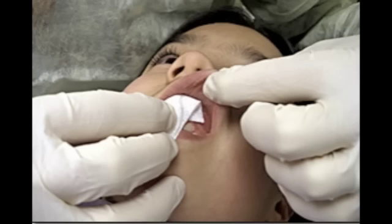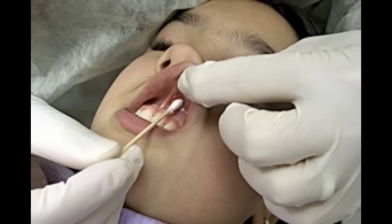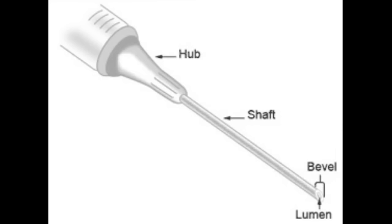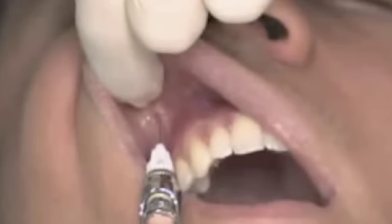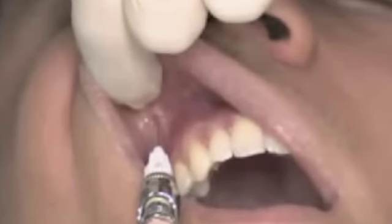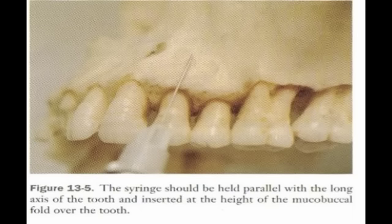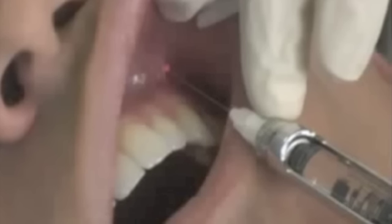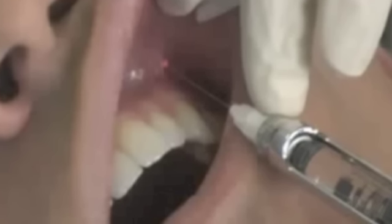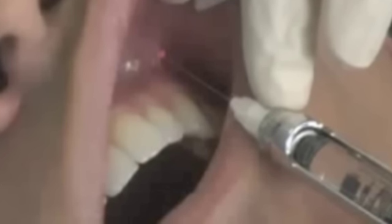Procedure: clean the insertion site by drying with sterile gauze. Apply topical anesthetic. Orient the needle bevel so it faces osseous. Lift lip, pull tissue taut. Hold syringe parallel with the long axis of the tooth. Insert at the height of the mucobuccal fold over the target tooth.